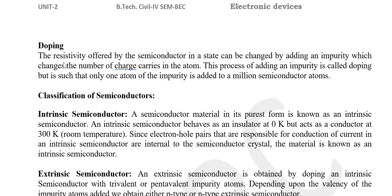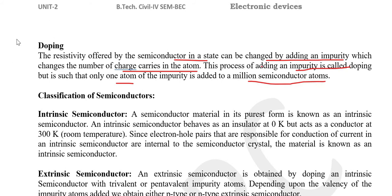Now, this is a very important phenomenon found in semiconductors — this is doping. The resistivity offered by the semiconductor can be changed by adding an impurity, which changes the number of charge carriers in the atom. The process of adding an impurity is called doping. We add a small amount of impurity into a pure semiconductor to increase its conductivity. The ratio is very small — one impurity atom per one million semiconductor atoms.